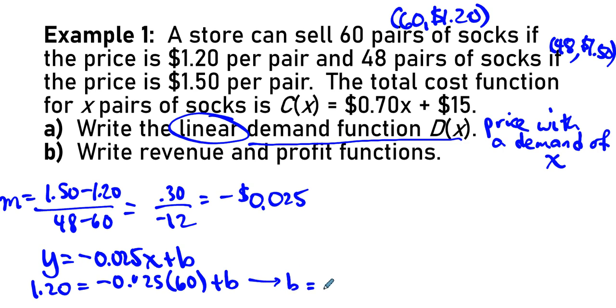The B value is $2.70, which means that the demand function is M X plus B. That's the demand function. If no socks were demanded by the economy, the price would be $2.70.